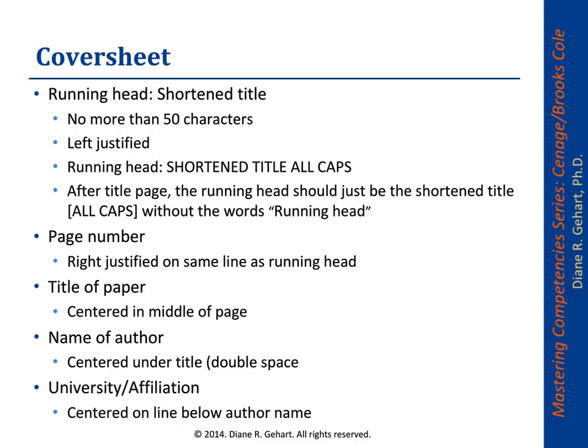Then you have the page number, which is right-justified on the same line as the running head. In the middle center of the paper, in title case, you write the title of the paper. On the next line — just double-spaced, no extra lines added — is the name of the author, centered under the title. The next line is the university or professional affiliation, centered on the line below the author's name. That's what's on a cover sheet.